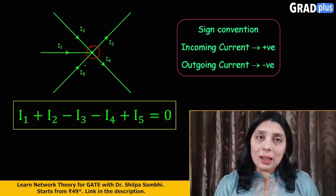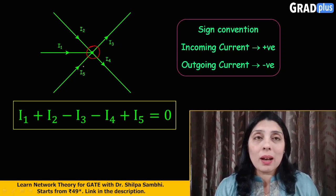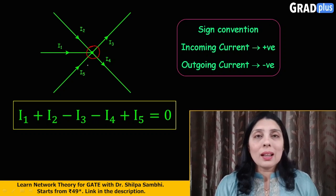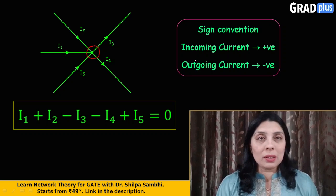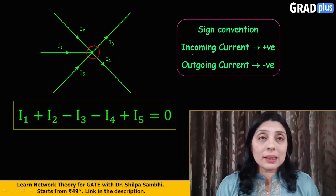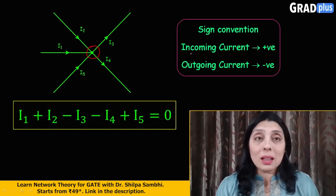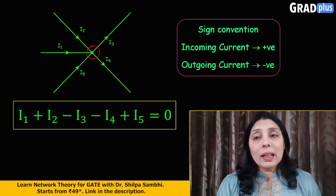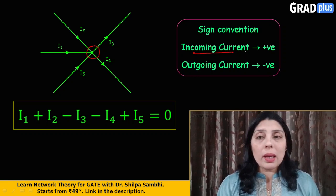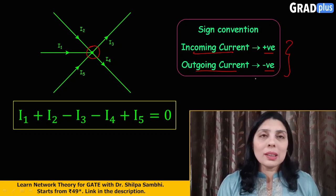Now if we apply nodal analysis to this, then first of all what we have to do is we have to have a good sign convention. That means that you should be perfect in your sign convention. You should assume your sign convention and then apply that sign convention throughout your circuit. You should not change your sign convention for each and every node. That is an important point to understand. So in this case I am assuming incoming current to be positive and outgoing current to be negative. Okay, so let's keep it simple and keep these sign conventions like this.